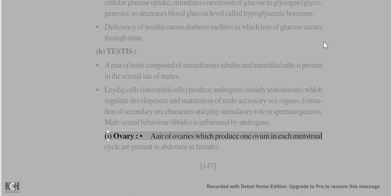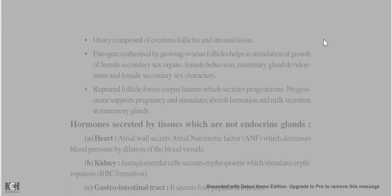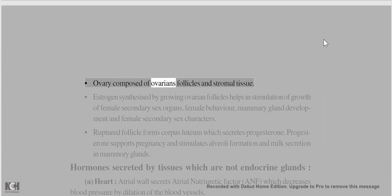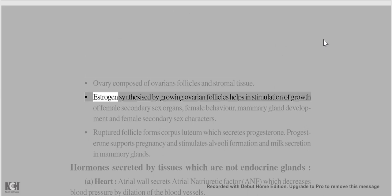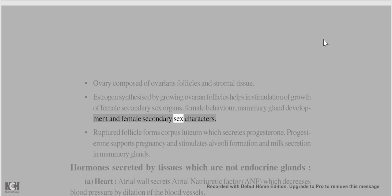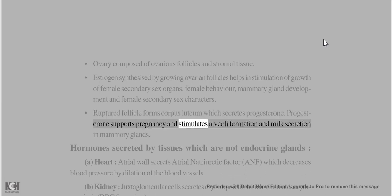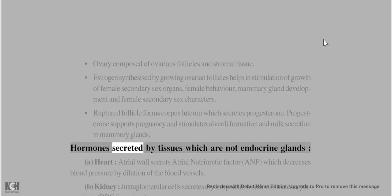Ovary: A pair of ovaries, which produce one ovum per menstrual cycle, are present in the abdomen of females. The ovary is composed of ovarian follicles and stromal tissue. Estrogen, synthesised by growing ovarian follicles, stimulates growth of female secondary sex organs, female behavior, mammary gland development, and secondary sex characters. The ruptured follicle forms the corpus luteum, which secretes progesterone – supporting pregnancy and stimulating alveoli formation and milk secretion in mammary glands.